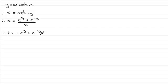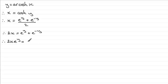Now e to the power minus y is 1 over e to the y, so to get rid of that fraction I'm going to multiply both sides by e to the power y. So we therefore have 2x e to the power y equals e to the power y times another e to the power y, which I could write as e to the power 2y, but I'm going to write it as e to the power y all squared.